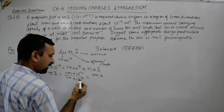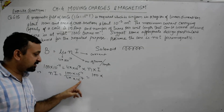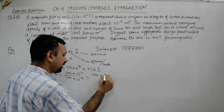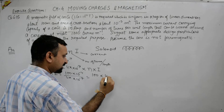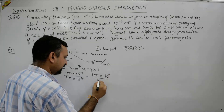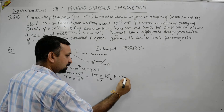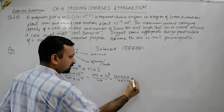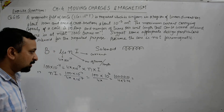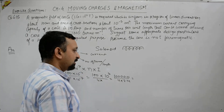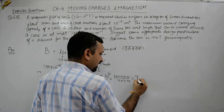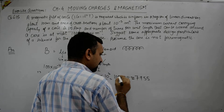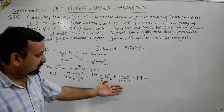Working out the powers: 10 to the power minus 4 divided by 10 to the power minus 7 gives 10 to the power 3, which is 1000. So the numerator becomes 100 times 1000 equals 1 lakh, divided by 4 pi, which is 4 times 3.14. Calculating this gives approximately 7955, which we round to approximately 8000.